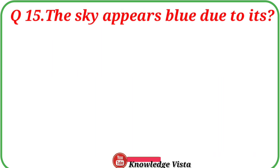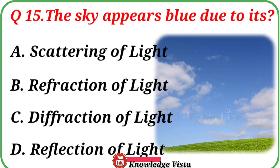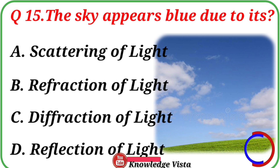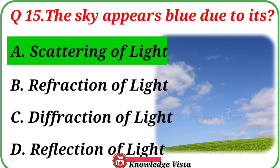Question number fifteen: The sky appears blue due to? Option A: Scattering of light, B: Refraction of light, C: Diffraction of light, D: Reflection of light. Correct answer is option A: Scattering of light.